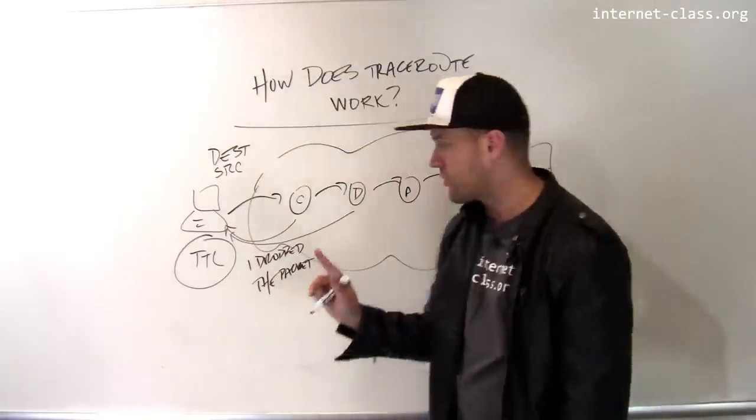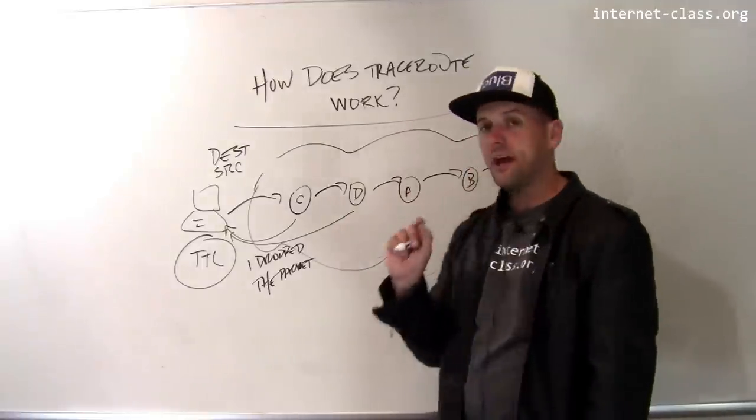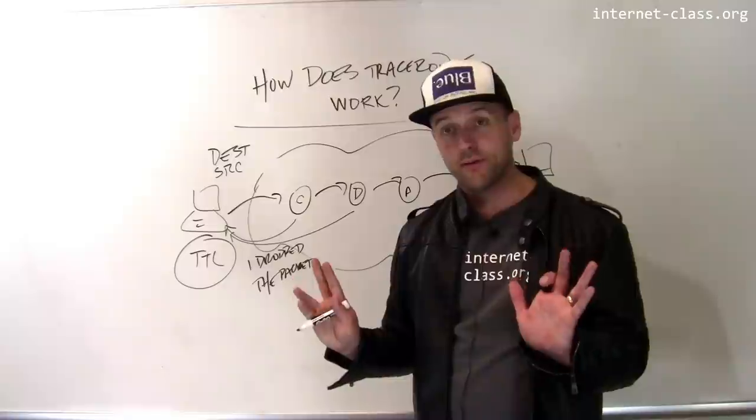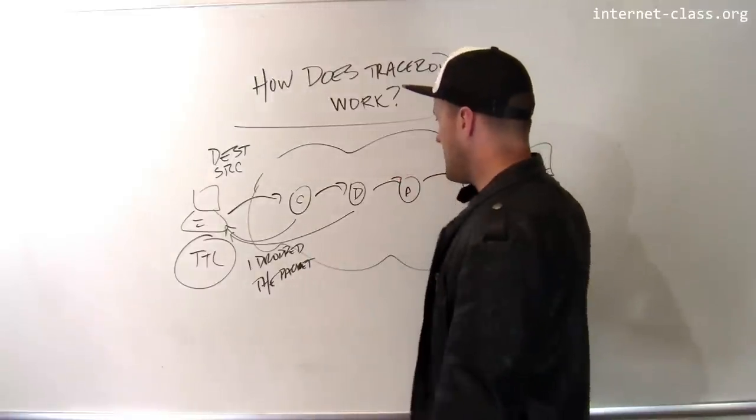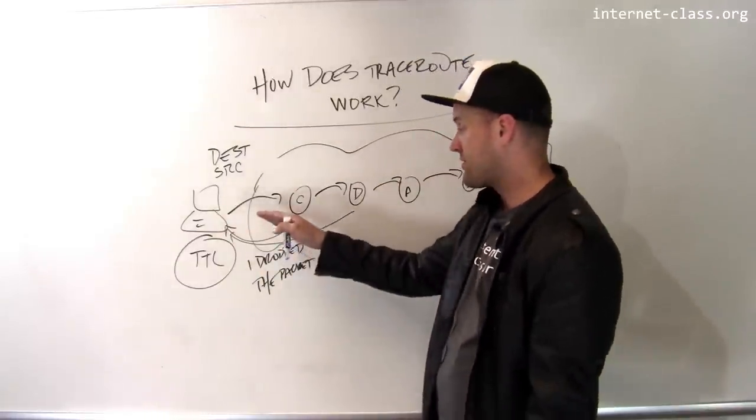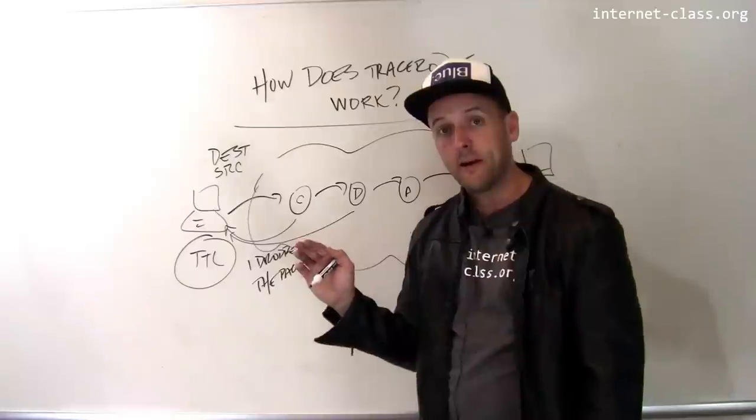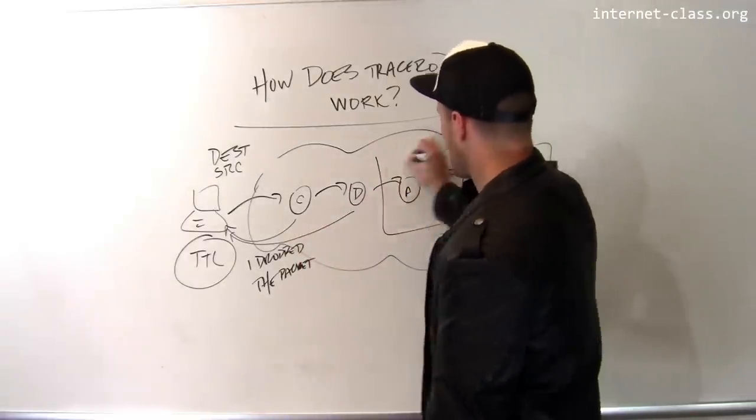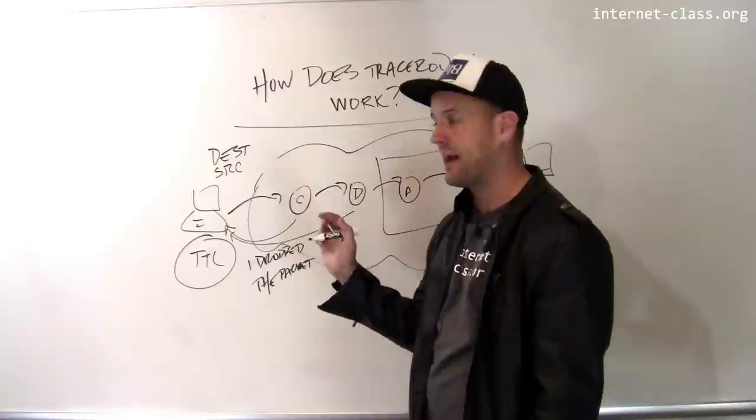Now there's some caveats here. One important thing is that these routers have to be configured to send these ICMP responses. Not all routers do that. The other thing is the network has to allow those responses to come back. So sometimes when you run a traceroute, you'll see that it stops at some point, and then you don't get any more information.